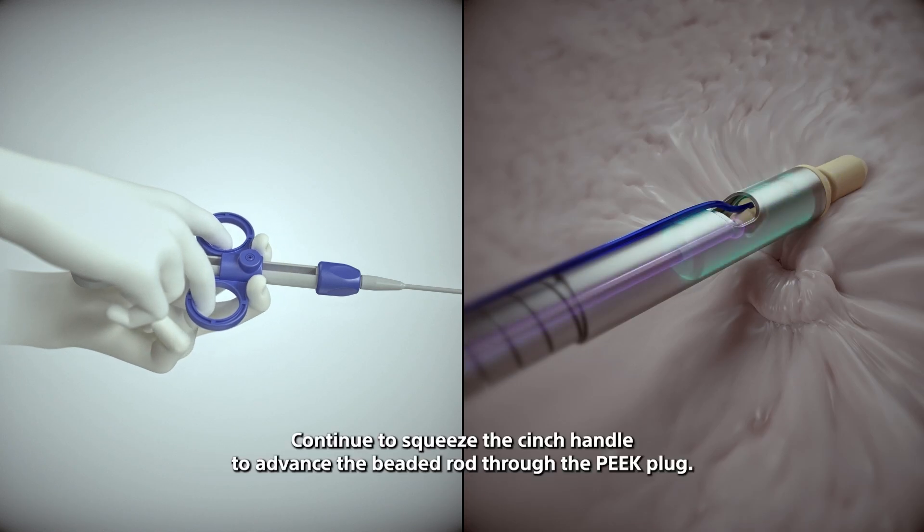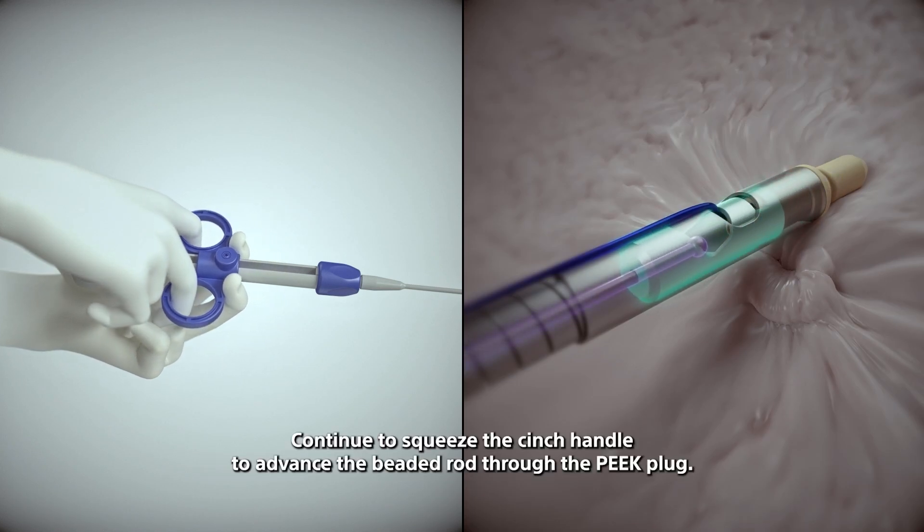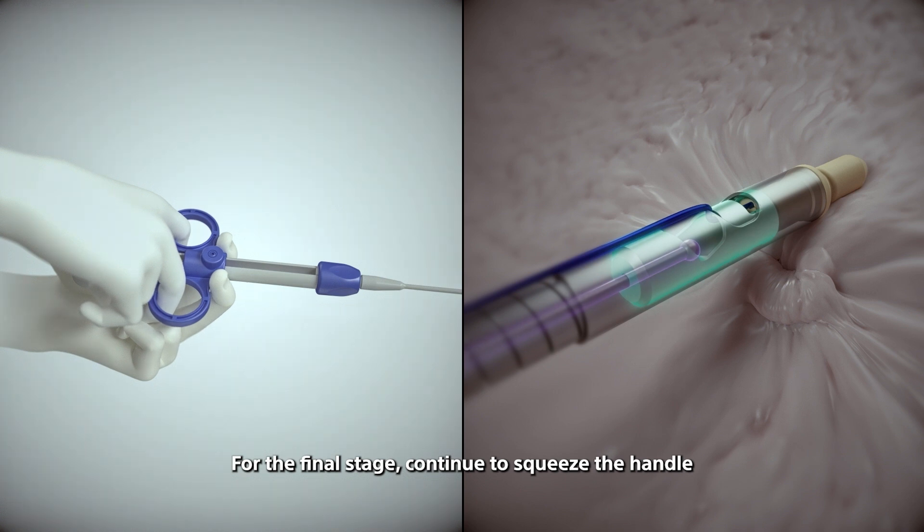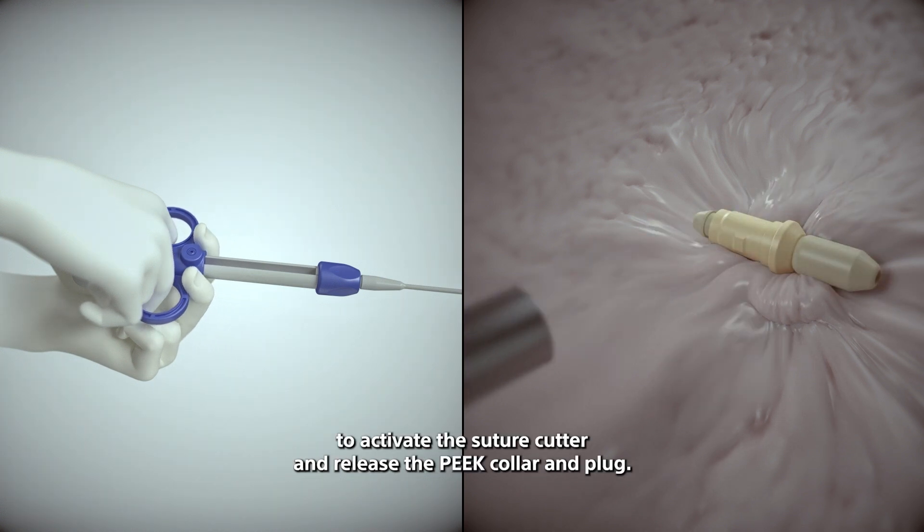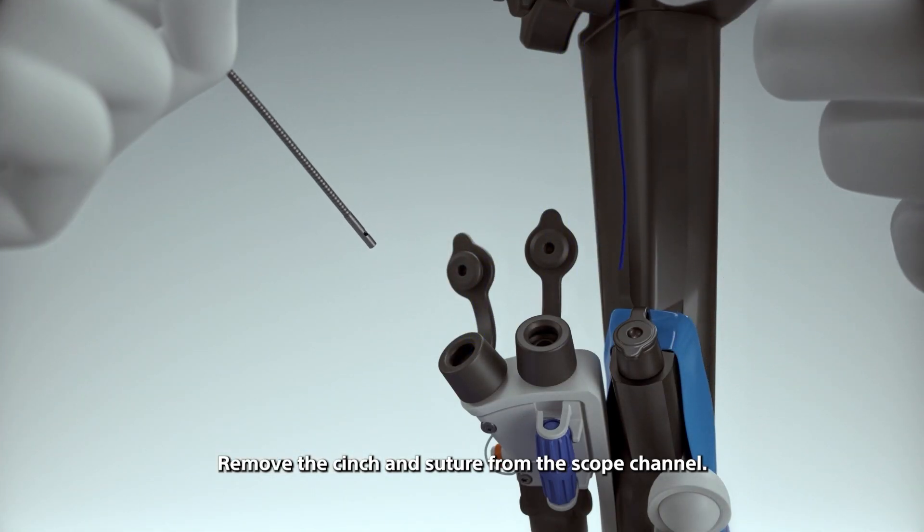For the final stage, continue to squeeze the handle to activate the suture cutter and release the peak collar and plug. Remove the cinch and suture from the scope channel.